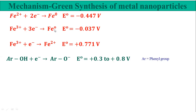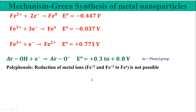Looking at the third half-cell, its potential is greater than the polyphenol half-cell potential. So Fe³⁺ will react with the polyphenolic compounds and be reduced to Fe²⁺, while the polyphenol is oxidized. However, the product is Fe²⁺, not Fe⁰ metal nanoparticles. Fe²⁺ then does not have the ability to be further reduced by the polyphenol to the zero valent oxidation state. So polyphenols simply cannot reduce Fe²⁺ or Fe³⁺ to Fe⁰ under standard conditions.